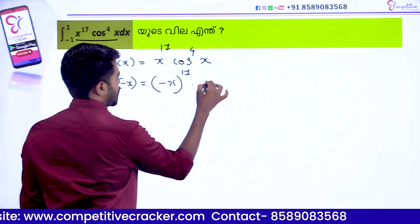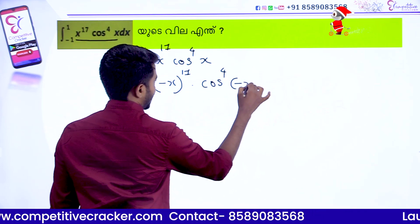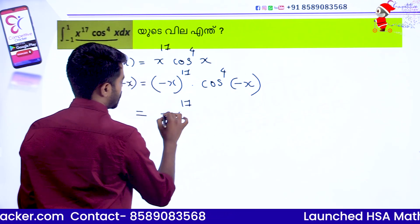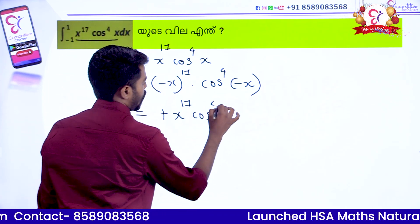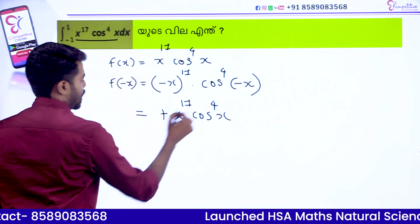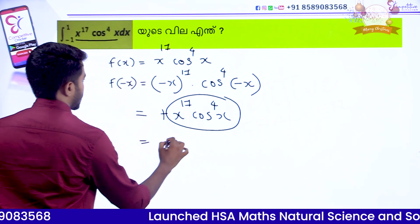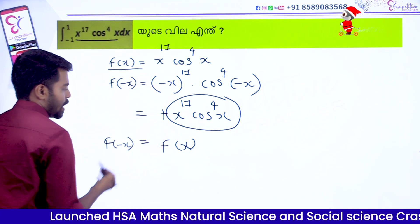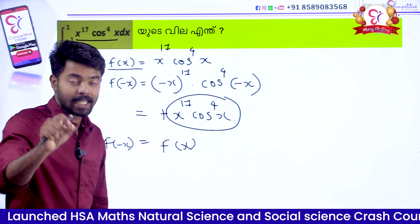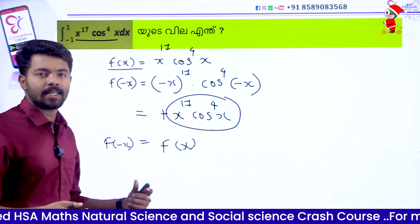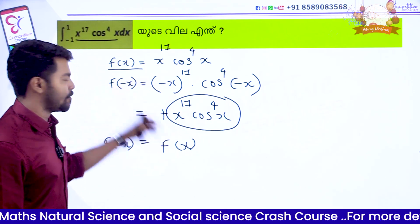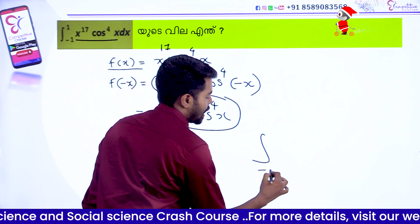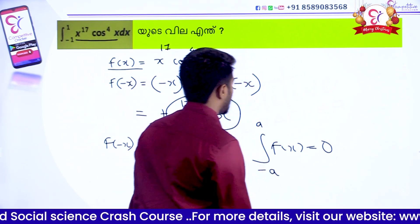That is minus x raised to 17 into cos raised to 4 of minus x. That's equal to minus x raised to 17. Again, a positive x raised to 17 minus x raised to 6. That is cos raised to 4 of x raised to 18. Now we put the textbook — this function is what we call an odd function. The property of an odd function: integral from minus a to a of f(x) dx equals 0. This is a very very important property.